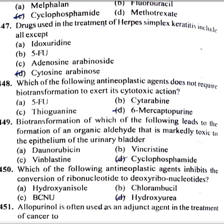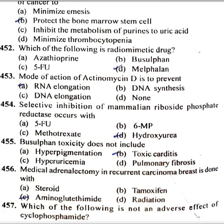Allopurinol is often used as an adjuvant in treatment of cancer to protect bone marrow stem cells. Which of the following is a radiomimetic drug? Melphalan. Mode of action of actinomycin D is to prevent RNA elongation. Selective inhibition of mammalian ribonucleoside diphosphate reductase occurs with hydroxyurea. Busulfan toxicity does not include toxic carditis.